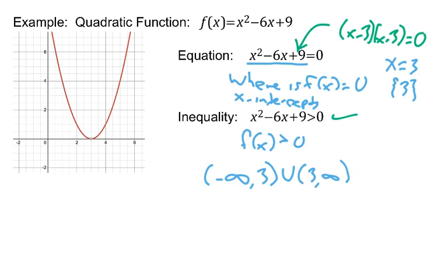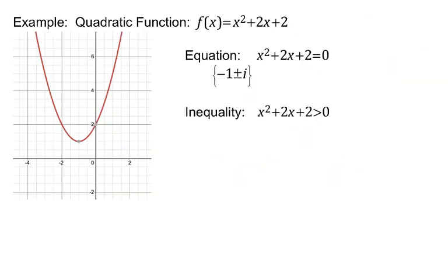I want to look at one more to show you something interesting here. Here's another quadratic equation that I looked at, and I took the time, and I don't want to go through it right now, I took the time of solving the equation using the quadratic formula, and this is what I got. Now, if the solutions of the equation are also the x-intercepts of the graph, what does that mean?